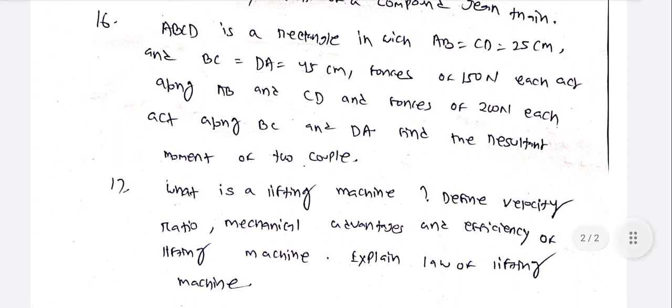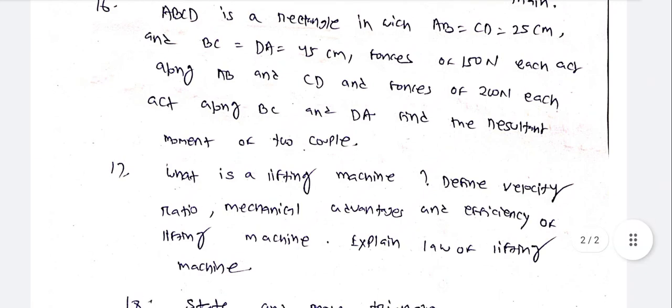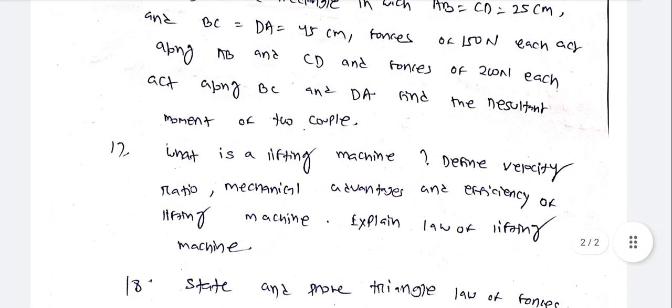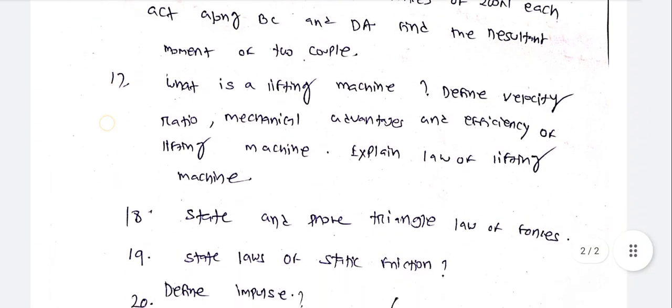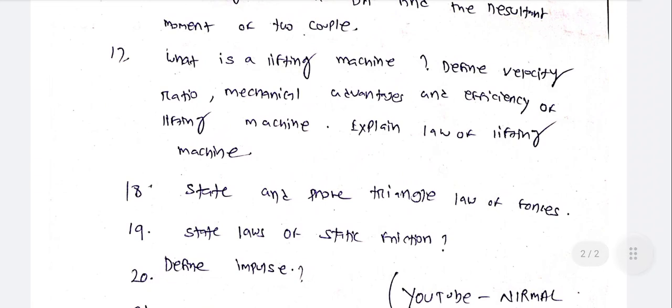FBCD is a rectangle in which FB equal to CD equal to 25 cm and BC equal to DA equal to 45 cm. Forces of 150 N each act along FB and CD, and forces of 200 N each act along BC and DA. Find the resultant moment of two couples.